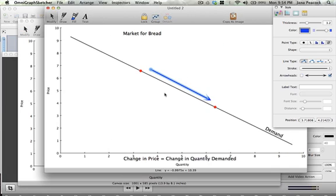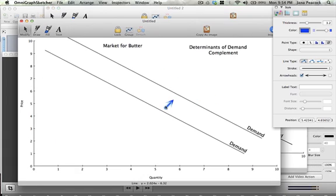So when the price of bread changed, the quantity demanded for bread changed. But when the price of bread changed, the demand for a complementary good increased. This means I got a whole new curve.